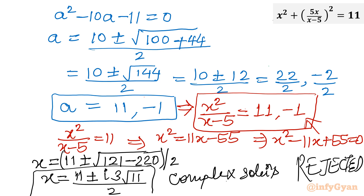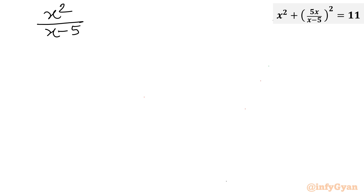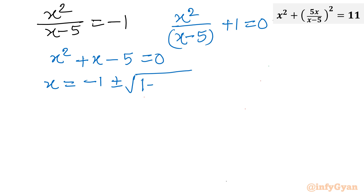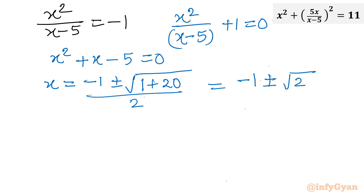Now I will consider the second equation with a = -1: x²/(x-5) = -1. Cross-multiplying and taking LCM: x² + x - 5 = 0. Solving with the quadratic formula: x = (-1 ± √(1 + 20)) / 2 = (-1 ± √21) / 2.